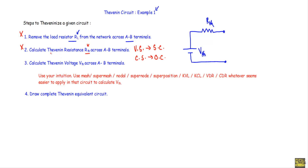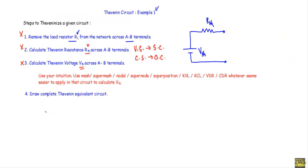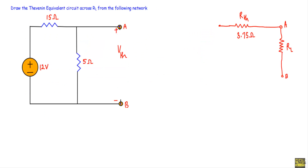We are done with step two. Now step three: calculate the Thevenin voltage Vth across the A and B terminals — that is, the voltage between terminal A and terminal B, with terminal A at higher potential. We can calculate Vth many ways: mesh, super mesh, nodal, super node, superposition, KVL, KCL, voltage divider rule, or current divider rule. Looking at this circuit, Vth is the voltage across the 5Ω resistor.